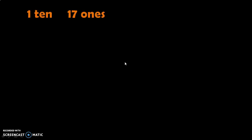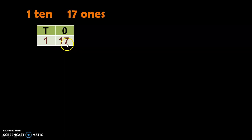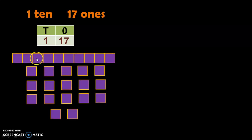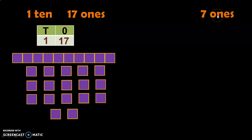Let us do another example. Here we have 1 Ten and 17 Ones. In the place value chart, you will have 17 in the Ones place and 1 in the Tens place. To regroup this, first look at the Ones place which has 2 digits — 17 Ones. 17 Ones can be written as 1 Ten and 7 Ones. So 7 Ones will be retained in the Ones place and the 1 Ten will be carried over to the Tens place. You already have a 1 there, so 1 plus 1 gives you 2 Tens. So 2 Tens and 7 Ones is the same as 1 Ten and 17 Ones.